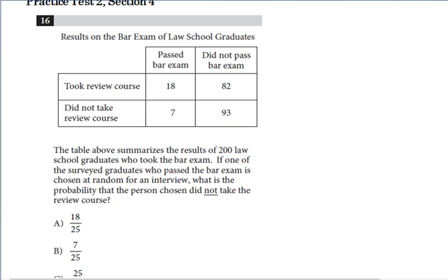The question asks: if one of the surveyed graduates who passed the bar exam is chosen at random for an interview, what is the probability that the person chosen did not take the review course? What goes into the denominator? Anyone who passed the bar exam - that's 18 plus 7. And how many did not take the review course? 7 of them.